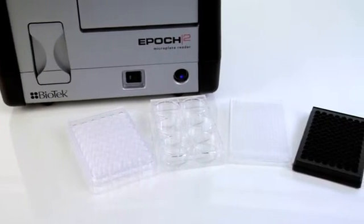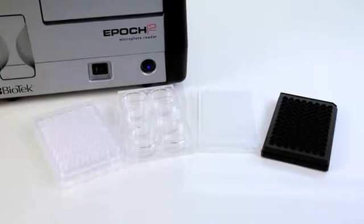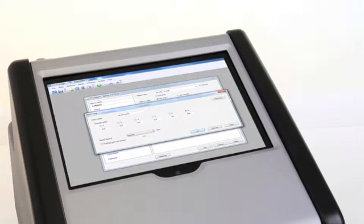EPOCH2 provides fast UV-Vis measurements in 6 to 384 well microplates with its 200 to 999 nanometer wavelength range.